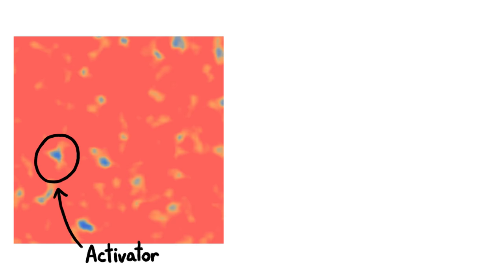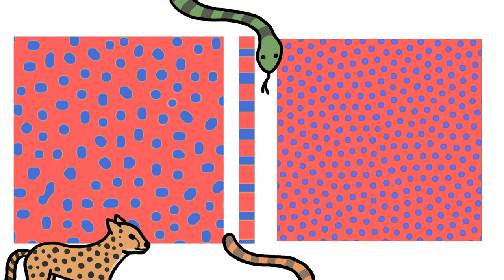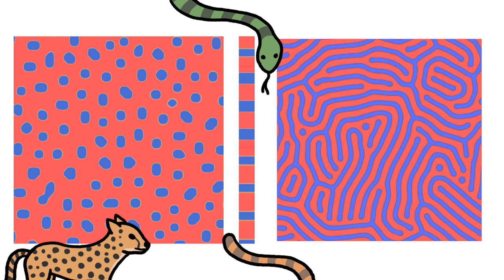Or if the system is just a narrow little strip, like a snake or a tail, you might end up with stripes. Or if the activator spreads a little faster, it might leak out and join up with other patches of escaping activator, creating a labyrinth pattern.